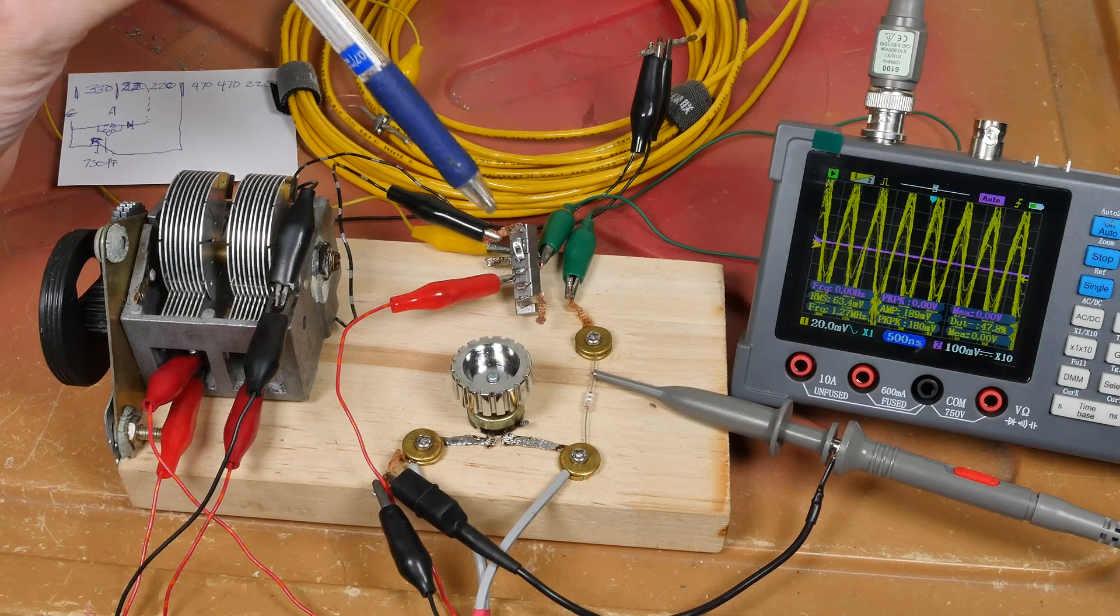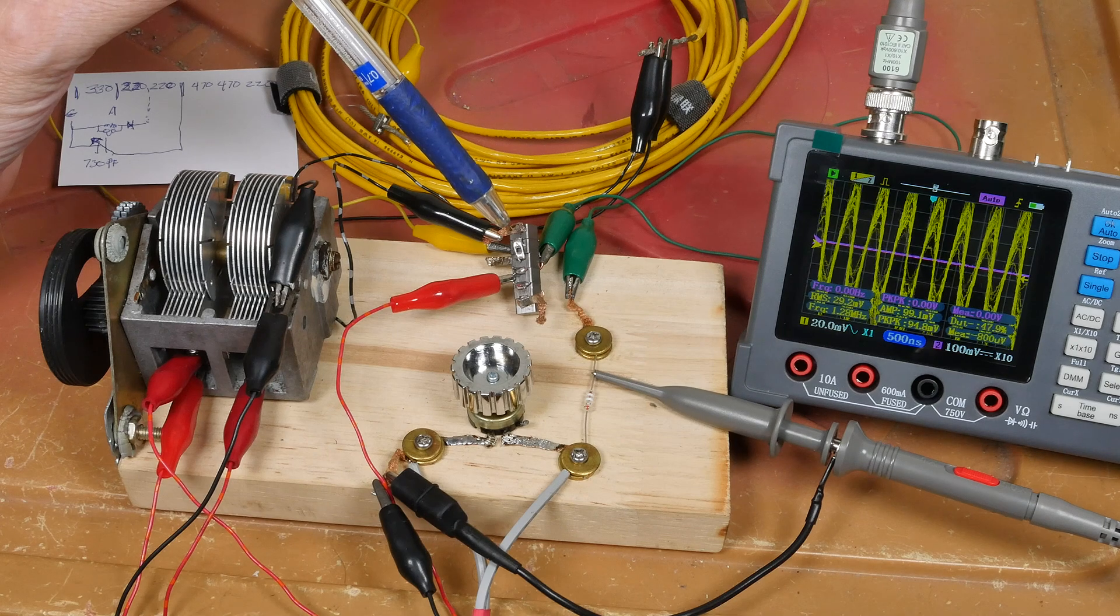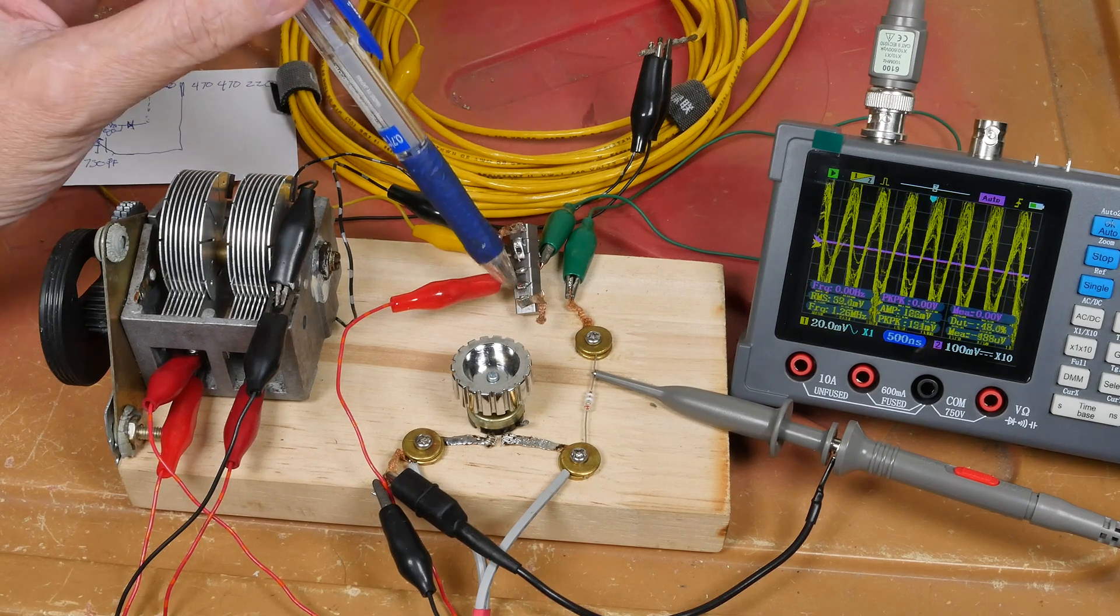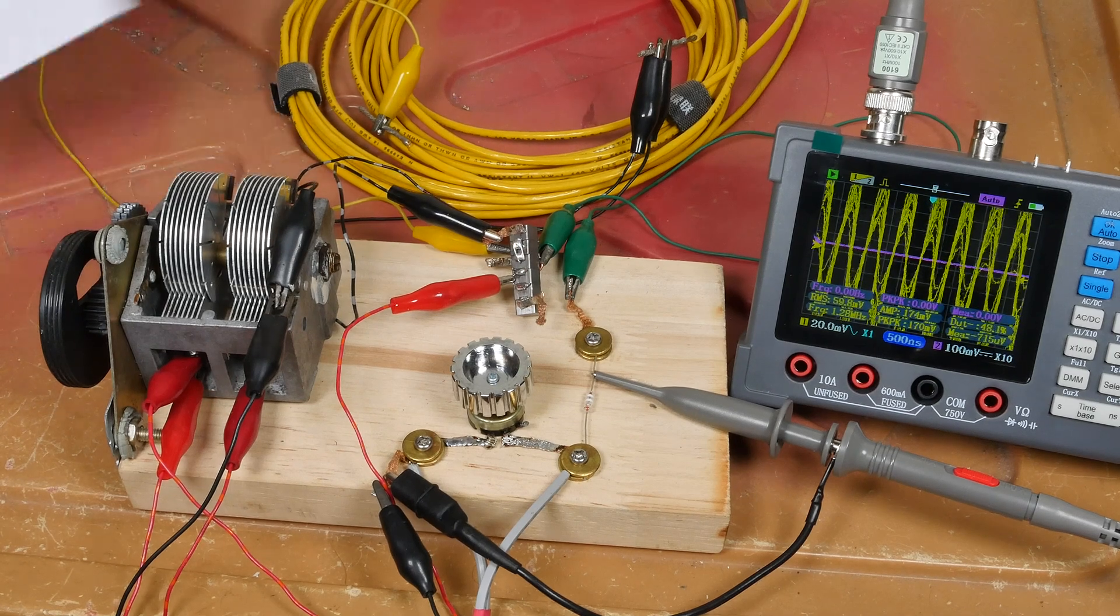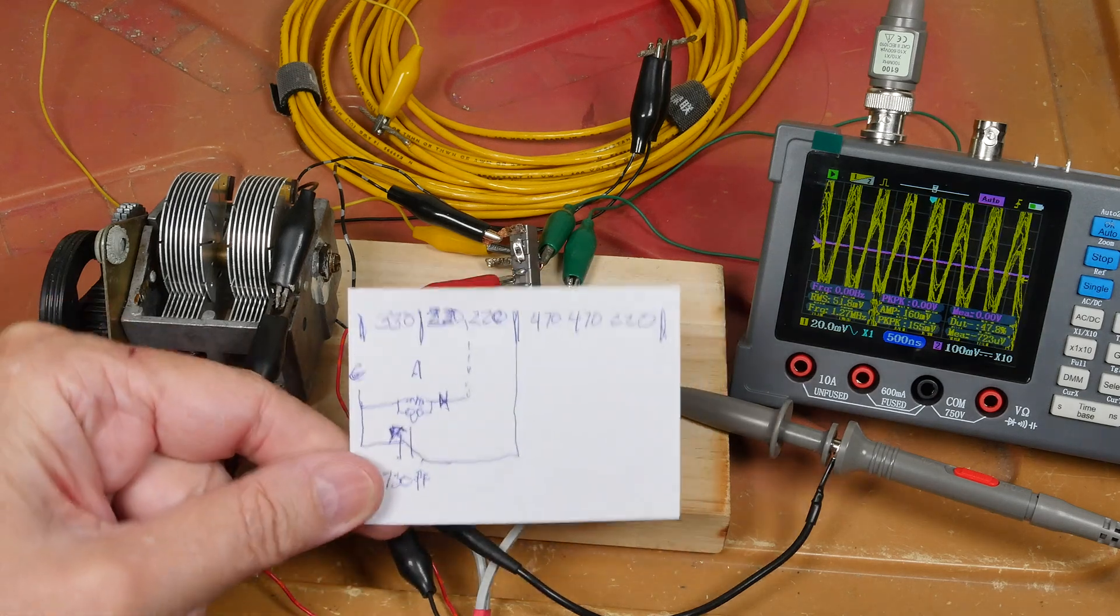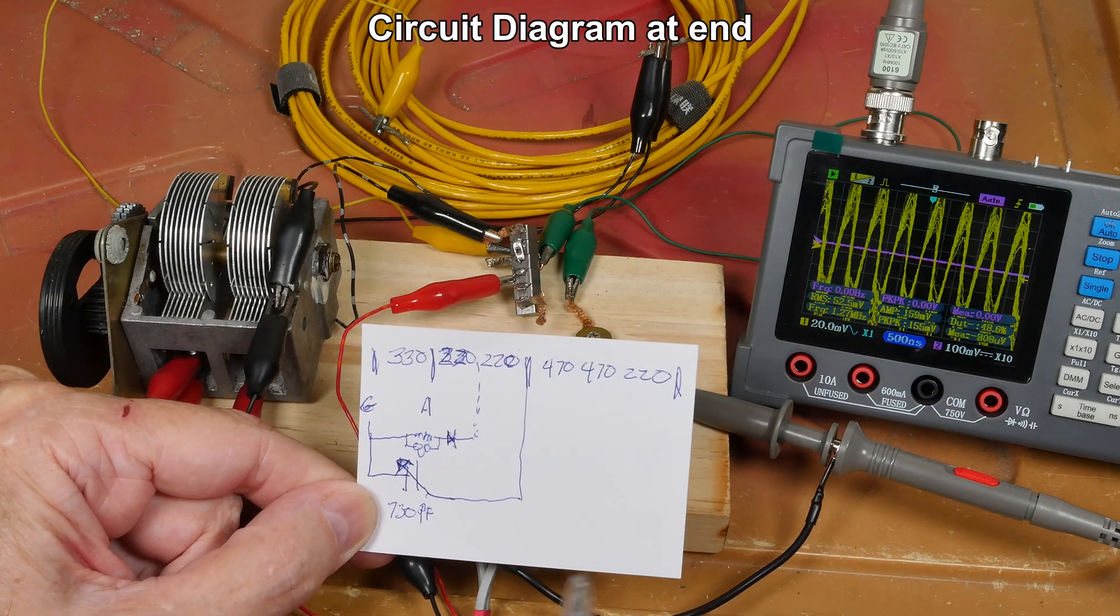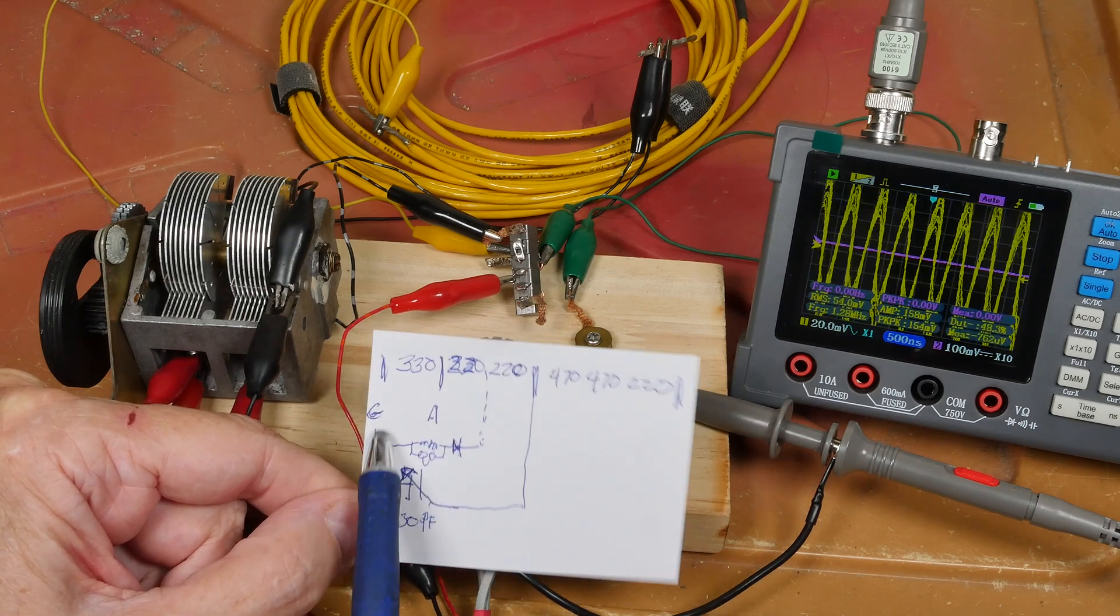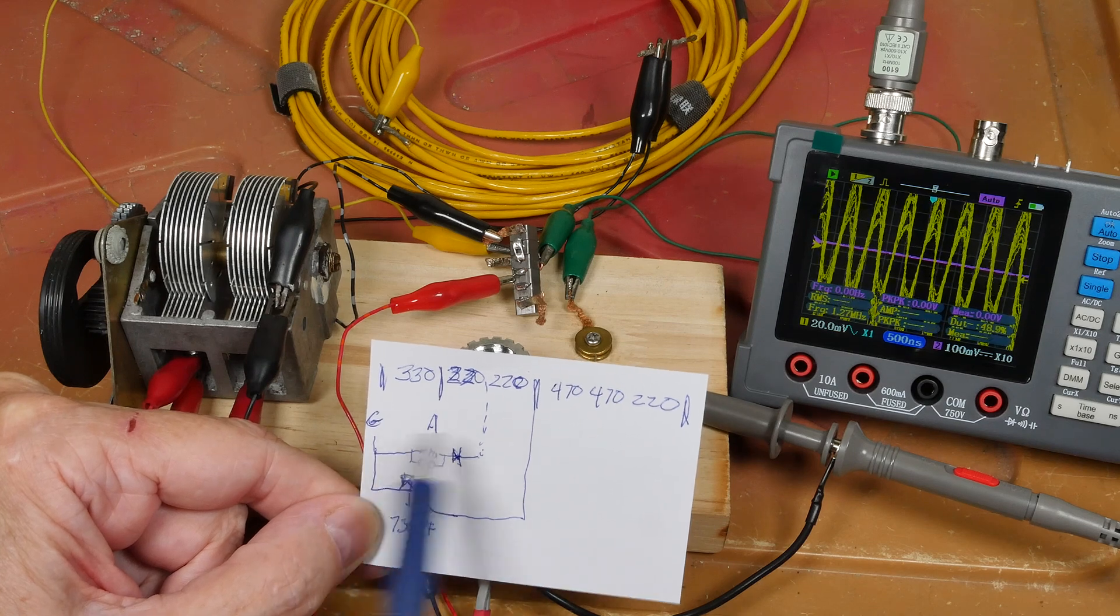Now, for those of you with sharp eyes, you probably noticed that these connections are nothing like we started out with the other. Yeah, in fact, these bottom three inductors aren't even being used. So, let me show you. Here's what I ended up with. So, again, the bottom three inductors are not even being used. The ground is here at the beginning. Normally, this is the antenna and then the ground, but it does not work well that way at all.